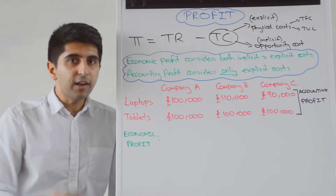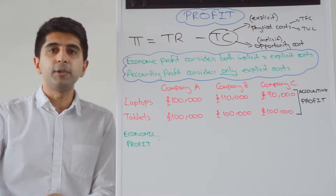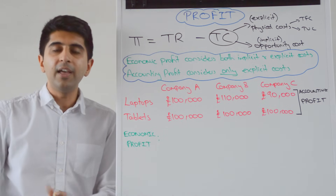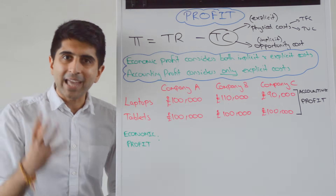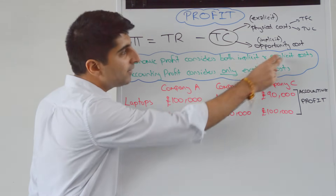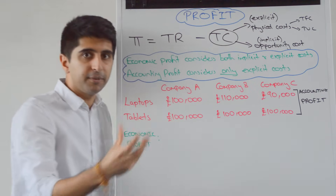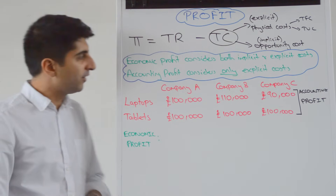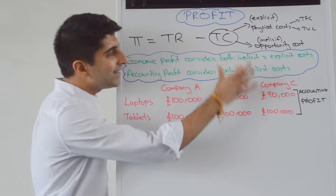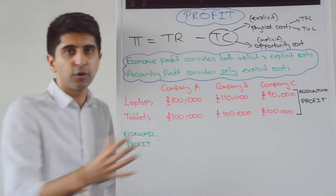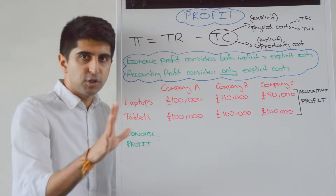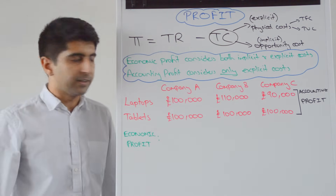You need to know that that is a key difference between economics and the way economists look at profit compared to how accountants look at profit. Economists consider both the implicit and the explicit costs within the profit equation, whereas accountants only consider the explicit costs — they ignore the opportunity cost when they calculate profit.